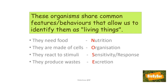All these organisms produce wastes — wastes made as a result of chemical reactions. This is called excretion, not to be confused with the production of number twos, which is called egestion. So these wastes are things like water vapour, water, salts, urea, and of course carbon dioxide. All these organisms also reproduce. So now we have a list of five characteristics: nutrition, organisation, sensitivity, excretion, and reproduction — NOSER. The five characteristics of life.